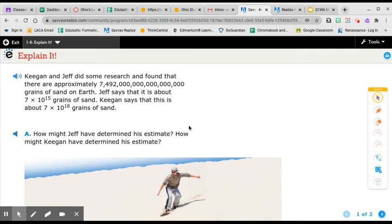Part A. How might Jeff have determined his estimate? How might Keegan have determined his estimate?